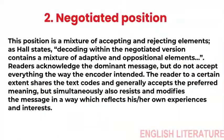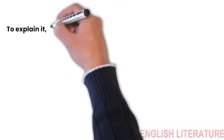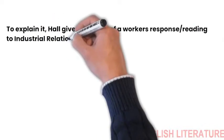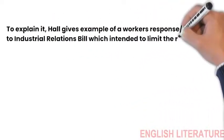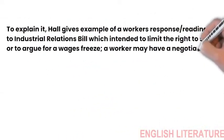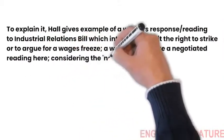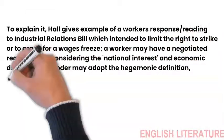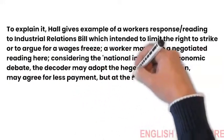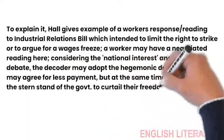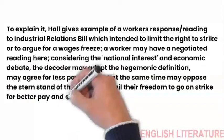Negotiated codes operate through what we might call particular or situated logics. To explain it, Hall gives example of a worker's response to industrial relations bill, which intended to limit the right strike or to argue for a wages freeze. A worker may have a negotiated reading here. Considering the national interest and economic debate, the decoder may adopt the hegemonic definition, may agree for less payment, but at the same time may oppose the stern standpoint of the government to curtail their freedom to go on strike for better pay and conditions.